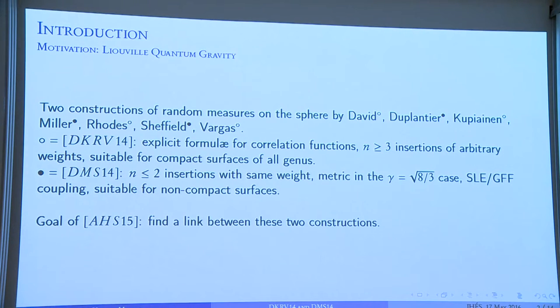But in the case of pure gravity, for this specific value of gamma, they have a metric instead of a measure. So they have something that is more powerful in some sense. And they have couplings with classical probability objects, such as SLE, and they're suitable for non-compact surfaces. I hope that the reason why one is suitable for compact surfaces and the other one is suitable for non-compact surfaces will be clear in the end.